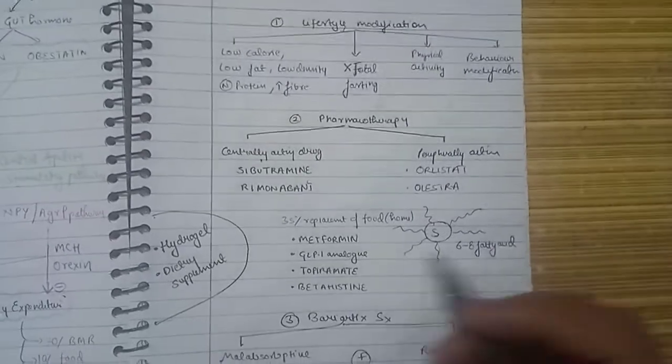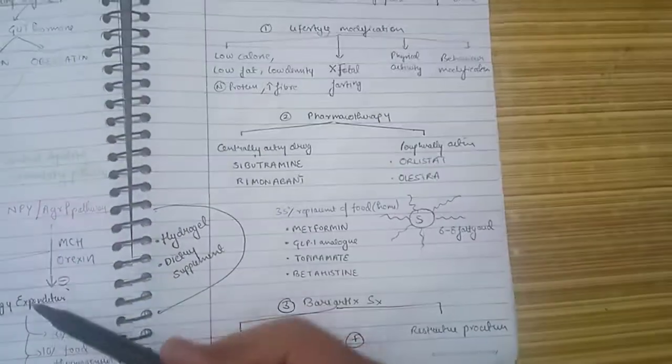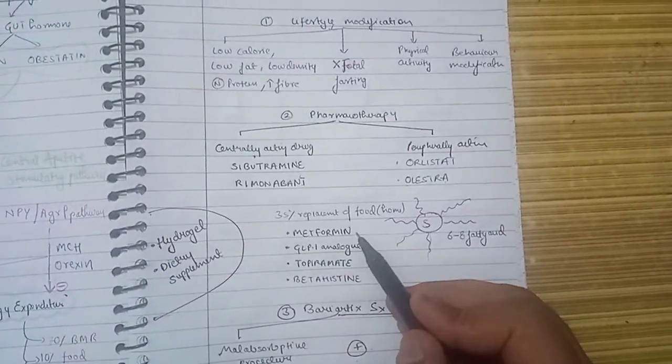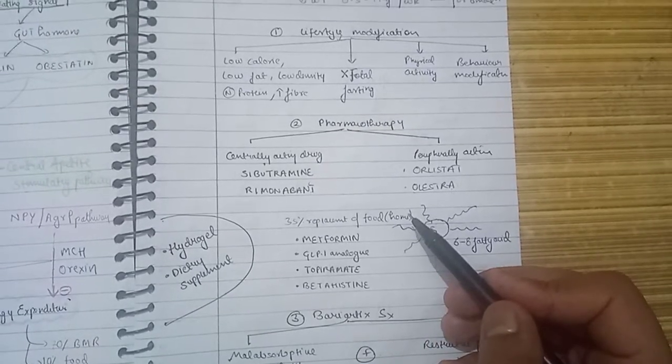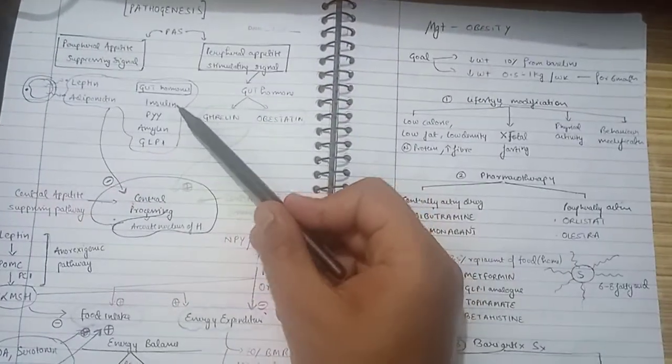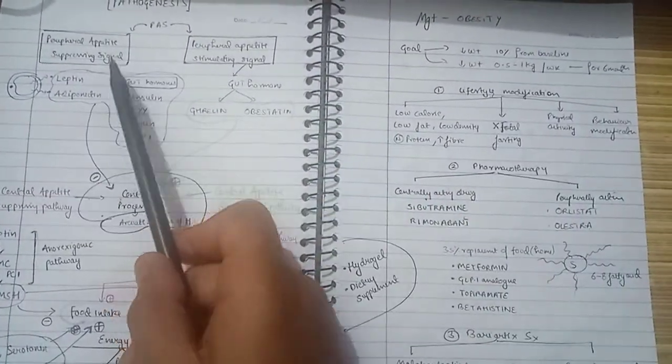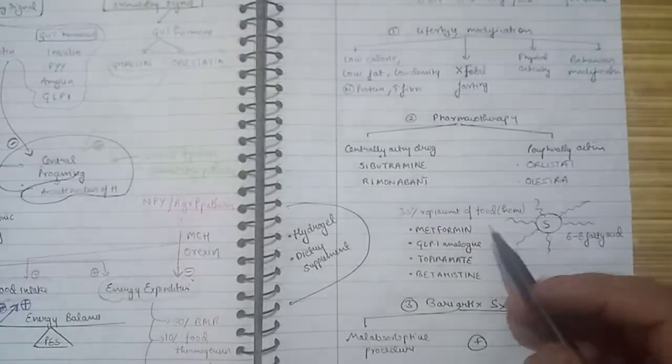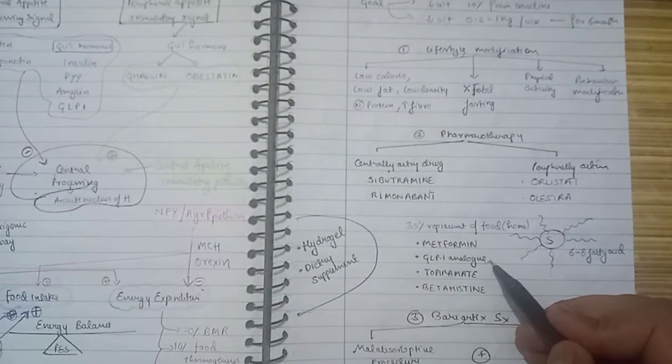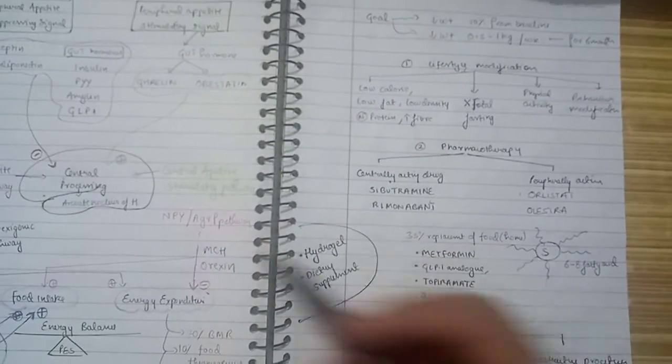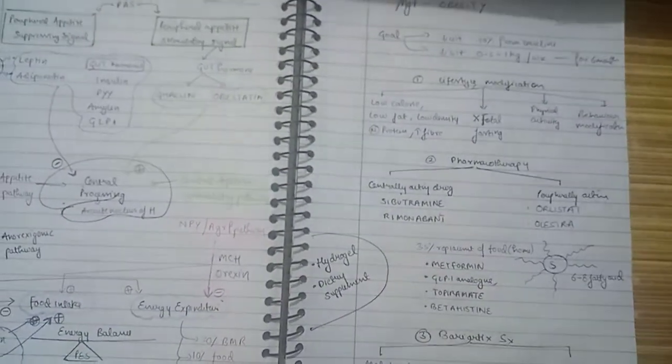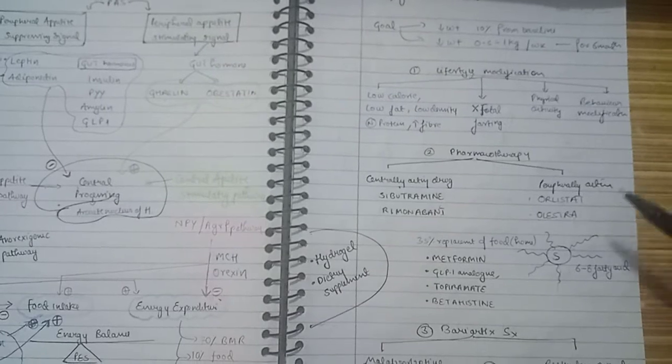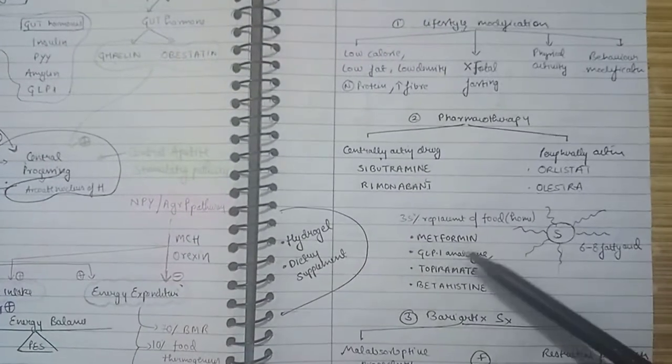Other drugs related to the pathogenesis of obesity include metformin, which is very useful in type 2 diabetes mellitus patients with obesity because it helps maintain insulin and decrease appetite. We have GLP-1 analogs like liraglutide, which act by the same mechanism as gut hormones that help maintain appetite-suppressing signals.